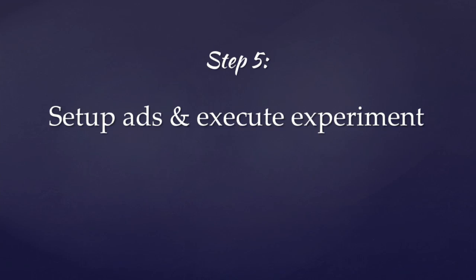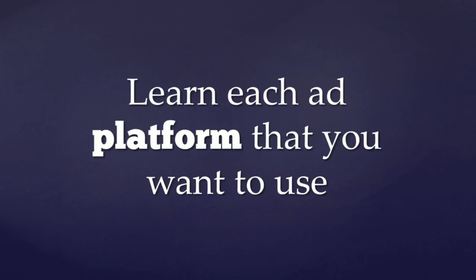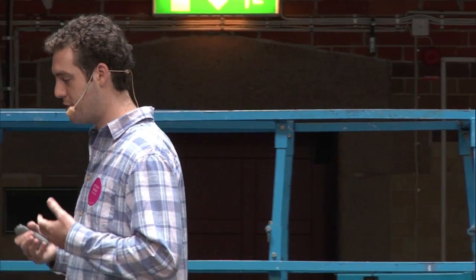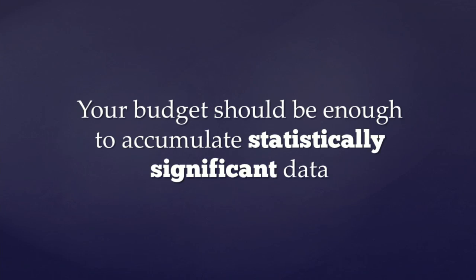Step five: set up your ads and execute the experiment. You need to learn each ad platform you want to use — Facebook, Google, and the others are all very different in terms of ad formats, image sizes, what they offer, and targeting criteria, so just go in there and learn them; they are pretty straightforward. A question I get quite frequently is how much budget should I spend on my experiment? The answer is you need enough budget spent to acquire statistically significant data — enough data such that a few more clicks or conversions here and there won't change the result significantly.